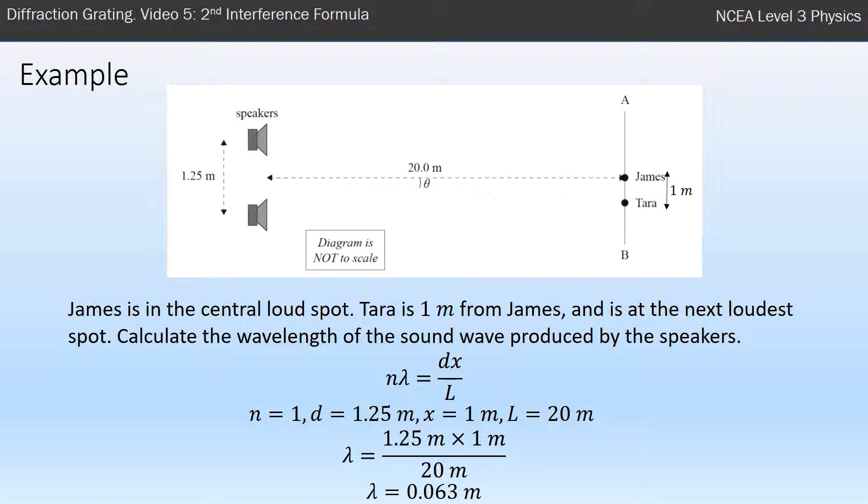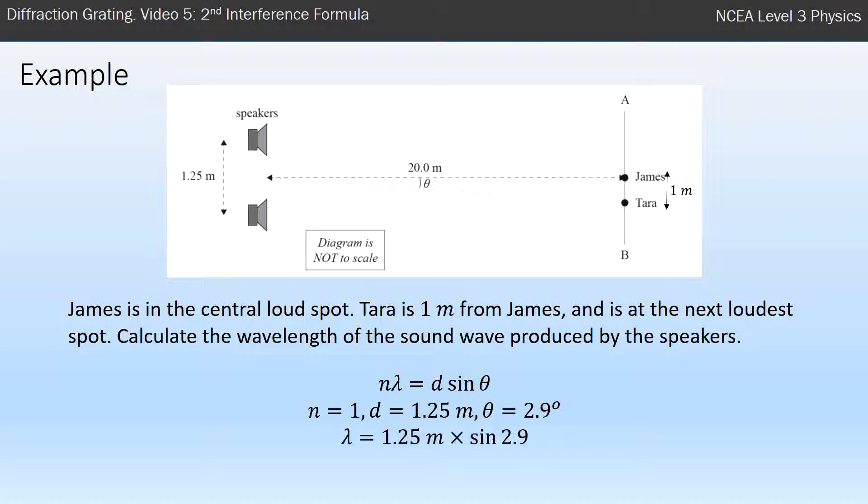However, what happened if I were to have used the first formula, the d sin theta? D is 1.25. I worked out the angle before with my tan of the triangle at 2.9 degrees. Throw everything together and I get lambda is 0.06 meters, which is again 6 centimeters. So I got the same answer.